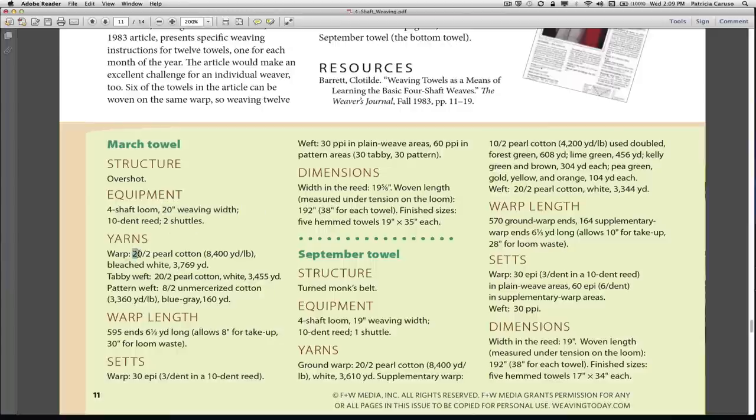For warp, it says to use 22 pearl cotton, which I will be using for both the warp and the tabby weft. For the pattern weft, I'll use 8-2 unmercerized cotton, which I also have. At a later time, I might go over this with you to try to determine what you would use for your set and how many ends you would have, if you were using 8-2 cotton for your warp.